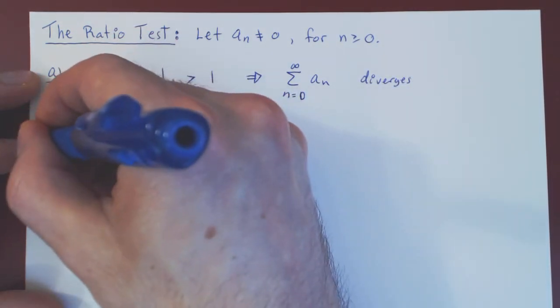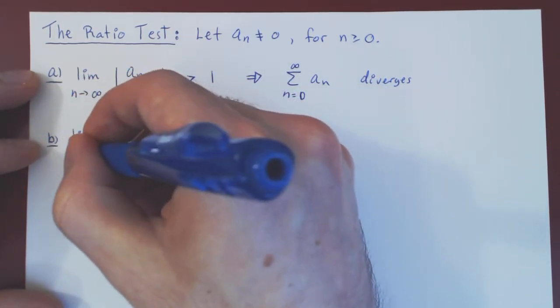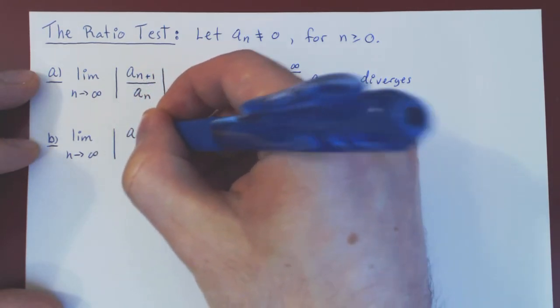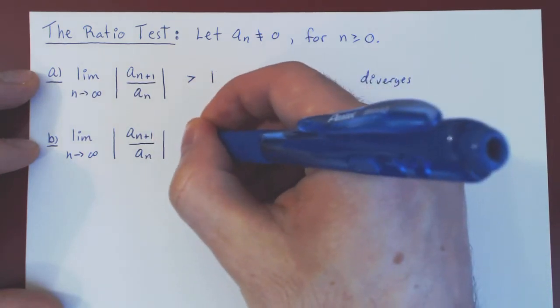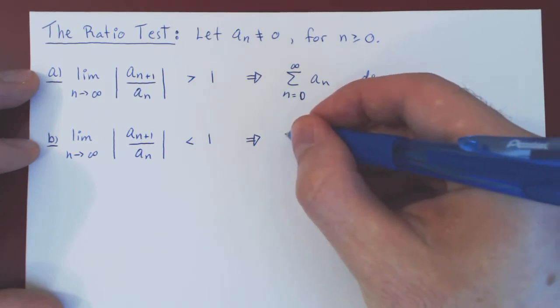Part b: if the limit as n tends to infinity of the ratio of consecutive terms in absolute value is now strictly less than 1, then the implication is that the series converges absolutely.